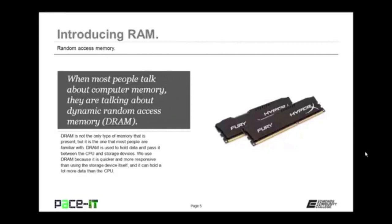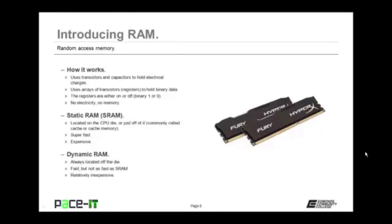We use dynamic random access memory because it's quicker and more responsive than using the storage device itself, and it can hold a lot more data than the CPU. We commonly refer to dynamic random access memory as RAM. RAM uses transistors and capacitors to hold electrical charges. Arrays of these transistors, called registers, are either on or off — binary 1 or 0. If there is no electricity, there is no memory.